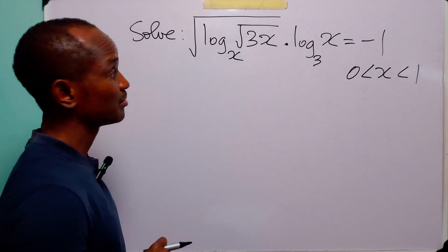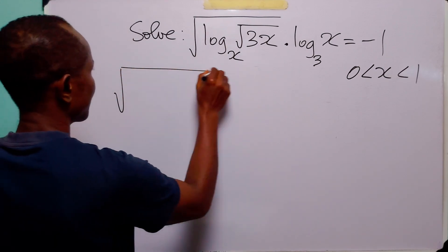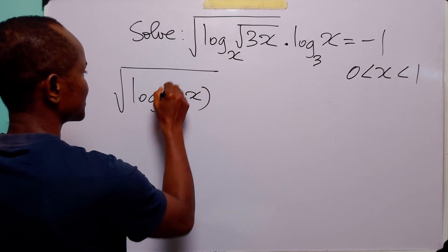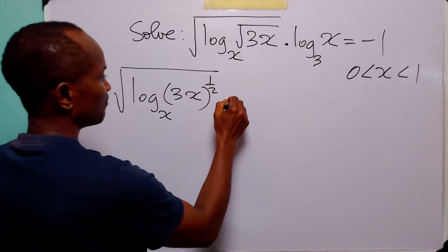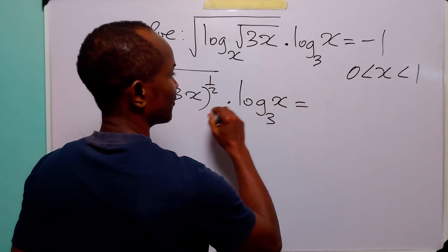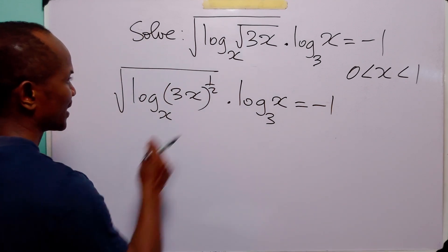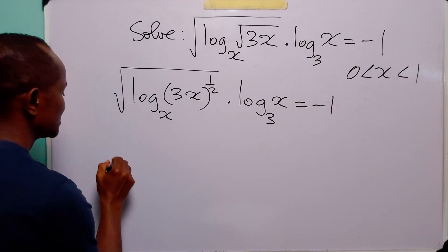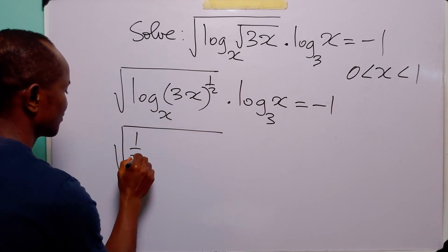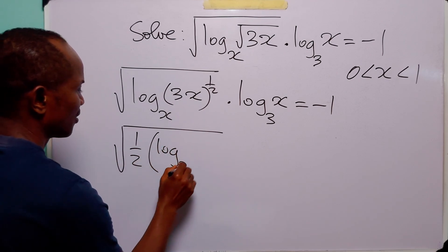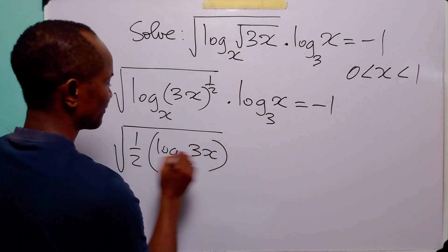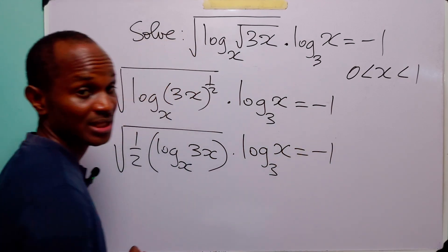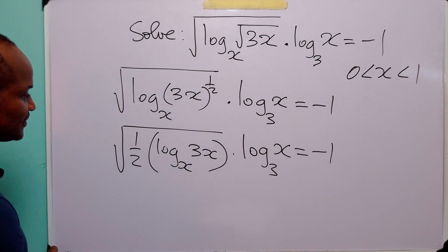Now to solve this logarithmic equation, let us write this as log to base x of 3x to the power half, multiplied by log to base 3 of x, and the product is equal to minus 1. Applying the power law, we can bring this half down to become a multiplier, so this can also be written as half multiplied by log to base x of 3x, multiplied by log to base 3 of x, and everything is equal to minus 1.